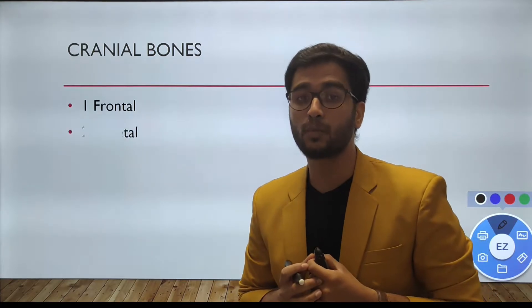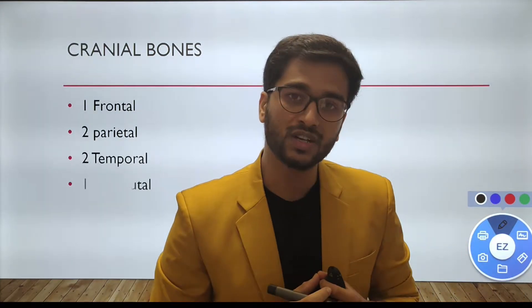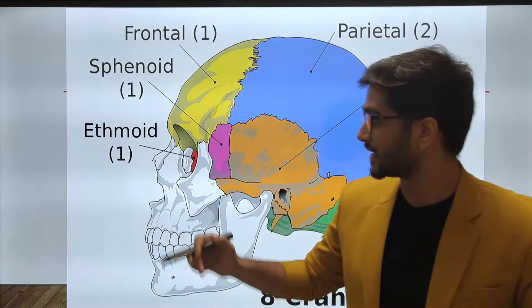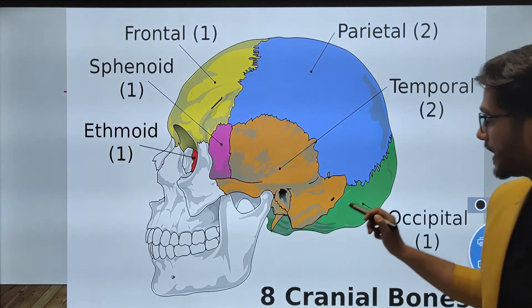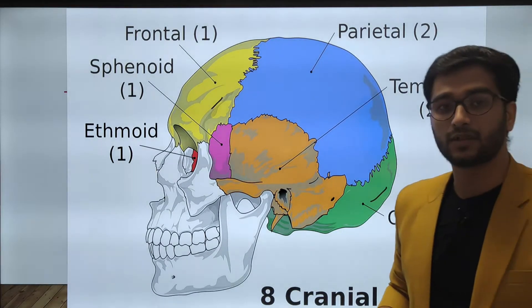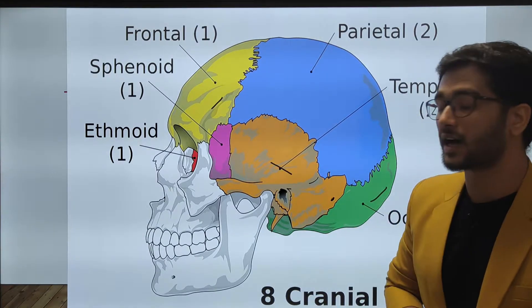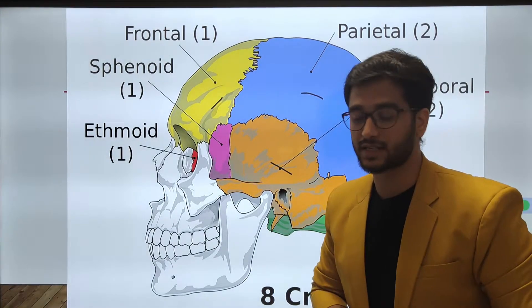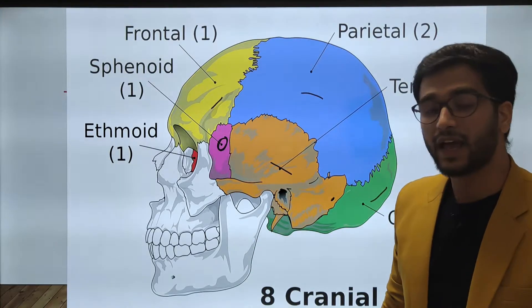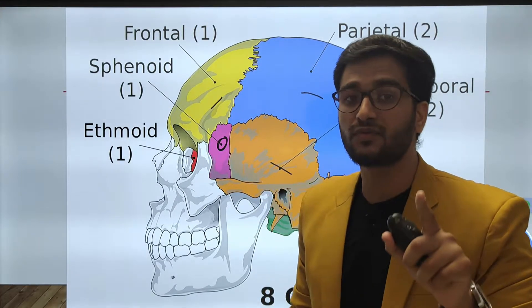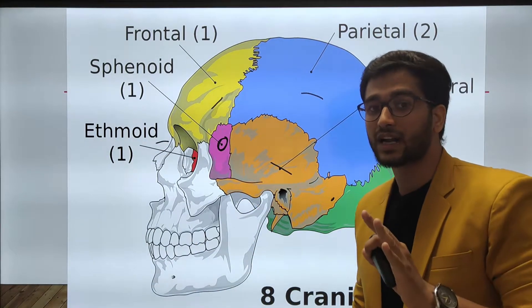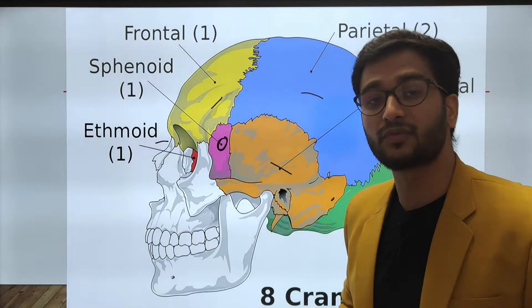The cranial vault is formed by 1 frontal bone, 2 parietal bones, 2 temporal bones, 1 occipital bone, 1 sphenoid, and 1 ethmoid. The frontal bone is at the forward direction, the occipital bone is at the back, and the temporal bones are situated lateral to the ear. Above that are 2 parietal bones. The sphenoid is at the side of the eyes, and the ethmoid bone makes the cavity. These cranial bones are joined together with the help of sutures, which are fibrous joints.